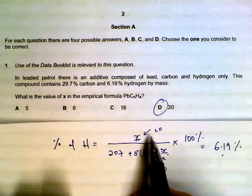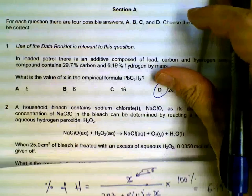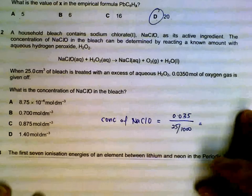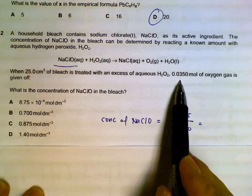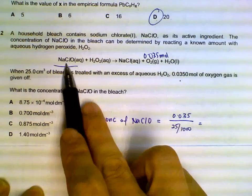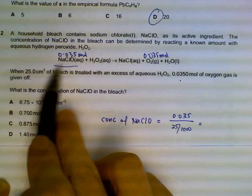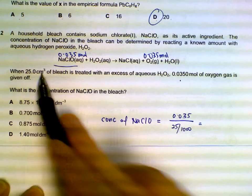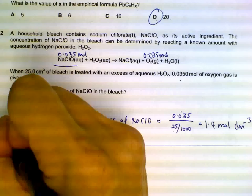Number two, finding out the concentration of the bleach sodium chloride. What we have will be the moles of oxygen gas, 0.035. By ratio, we will also have 0.035 moles of your sodium chloride. This is the volume of the sodium chloride, so moles divided by volume expressed in dm cubed, you will have our concentration, 1.4 moles per dm cubed.